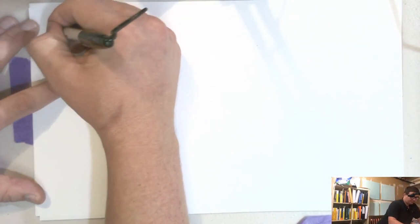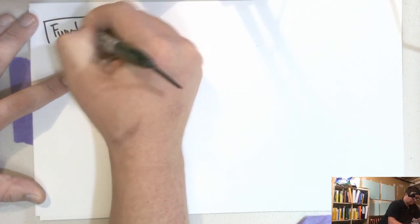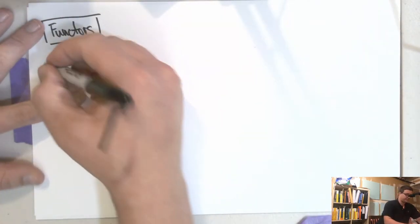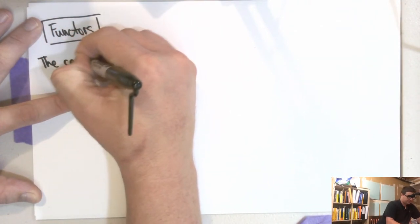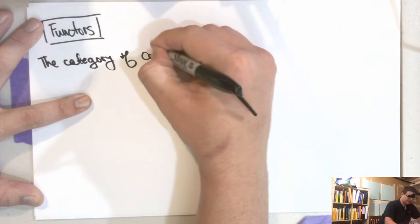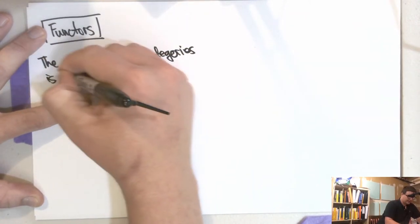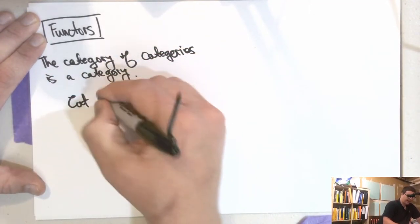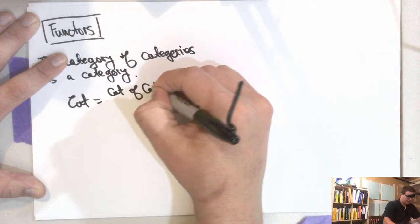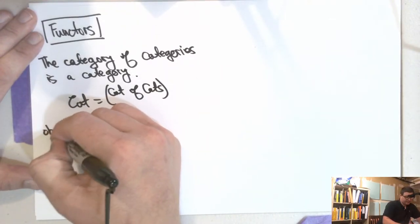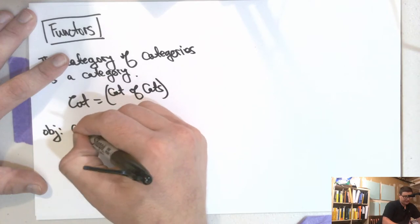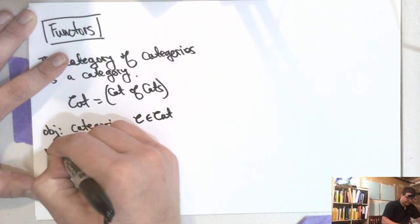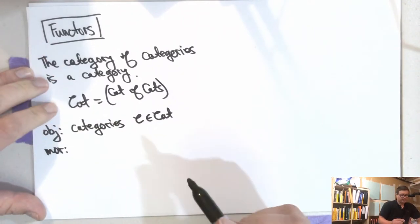Functors are kind of what makes everything go. It turns out the category of categories is itself a category — we'll use the notation Cat. The objects of Cat are categories, and the morphisms are what are called functors from C to D. They're like homomorphisms of categories.